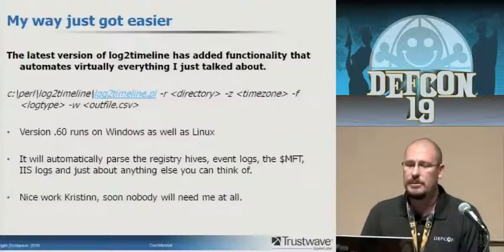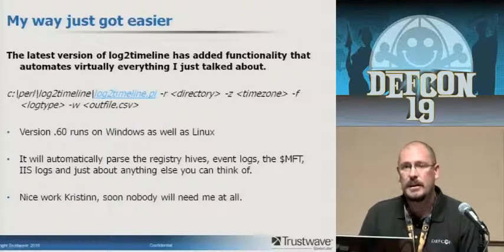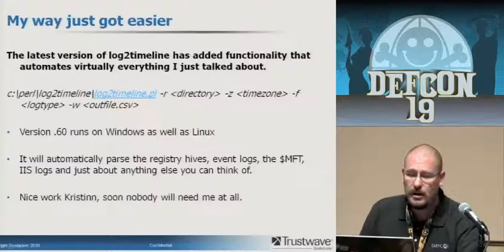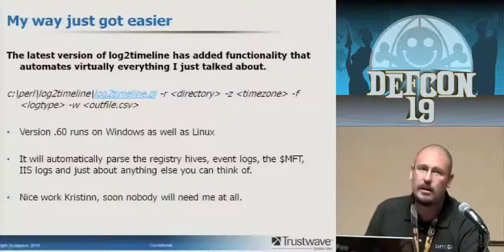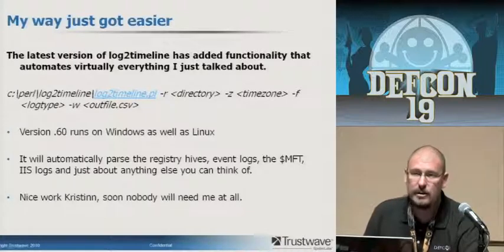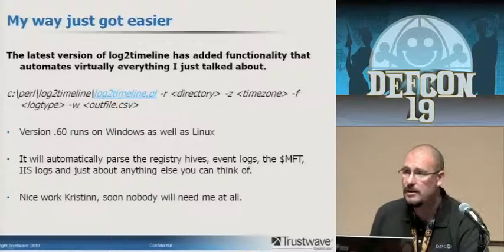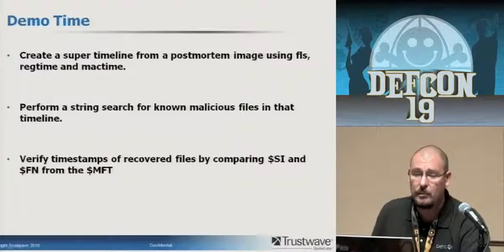Now back to log2timeline. The latest version has added functionality that automates just about everything I just talked about and more. Version 6.0 will run on Windows with some finagling — look for a blog post from Chris Pogue on exactly how to get it working. It will automatically parse registry hives, event logs, MFT, IIS logs — just about anything that logs with a timestamp. It actually does magic number searches, so it will automatically identify an EVT or EVTX and parse it the way it knows how. It's a pretty amazing tool.